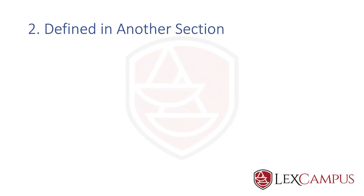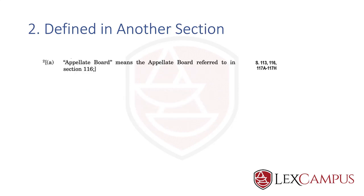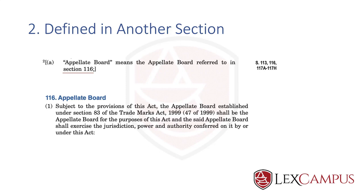The second type of classification is defined in another section. If you look at section 2(1)(a), 'appellate board' means the appellate board referred to in section 116. So the definition in section 2 takes you back to section 116.